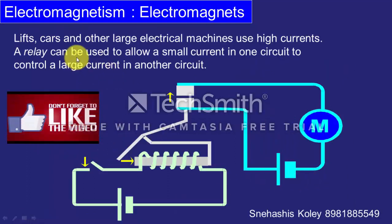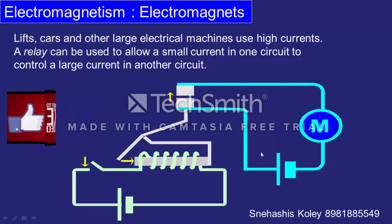Another example of electromagnets is the electromagnetic relay. In this circuit, a car motor, lift or other large electrical appliance uses a large amount of current. When we switch on the control circuit, the electromagnet starts working and attracts a rod towards itself, closing the motor circuit so current flows and the motor starts. When we switch off the key, the electromagnet demagnetizes and releases the rod, opening the circuit and stopping the motor. In this way, we can control large currents using a small electromagnetic switch.